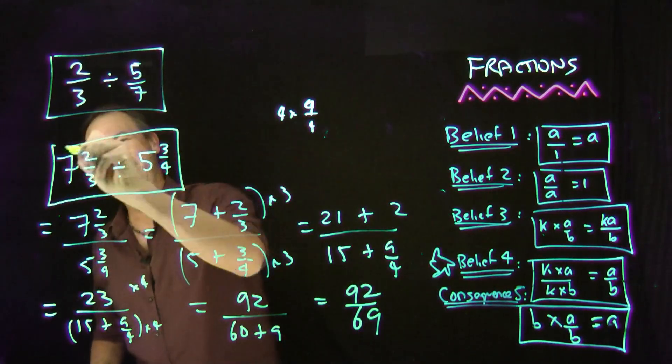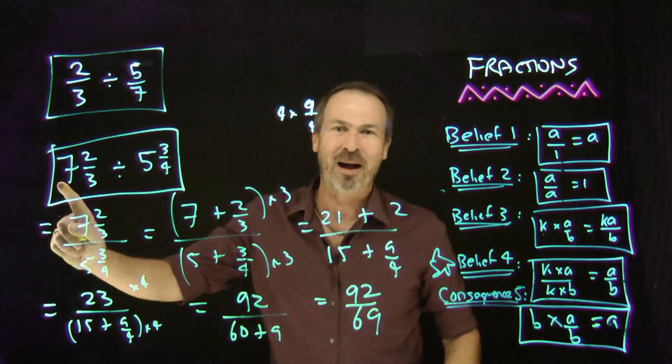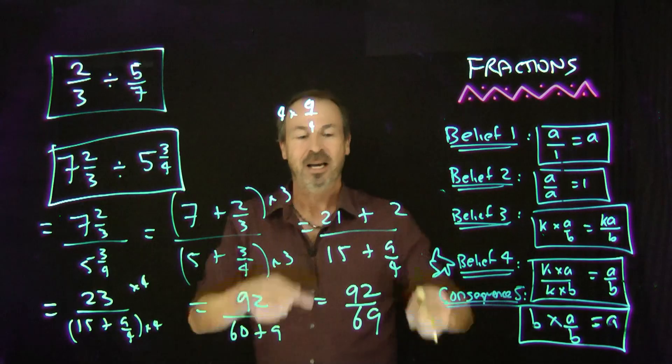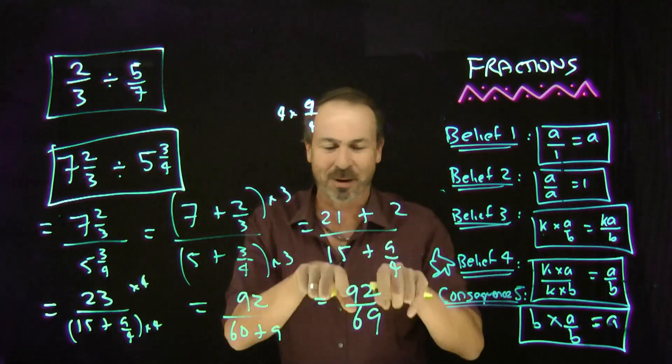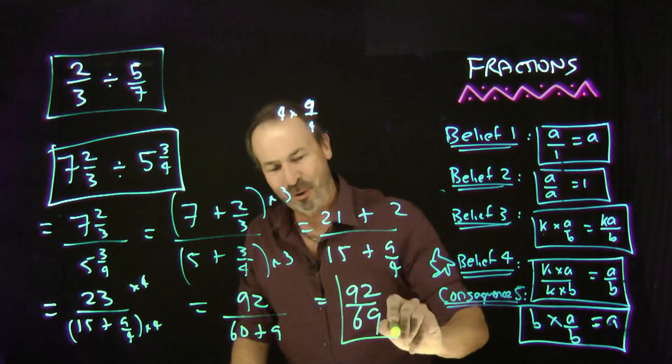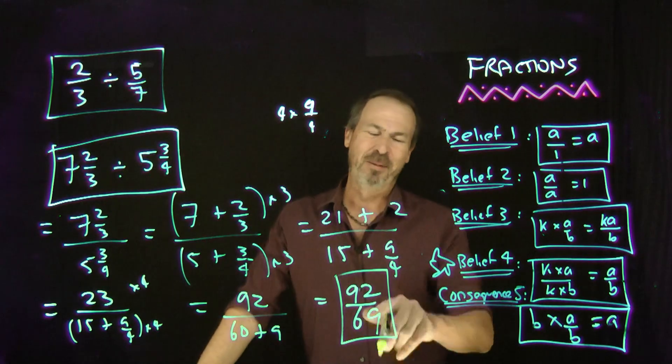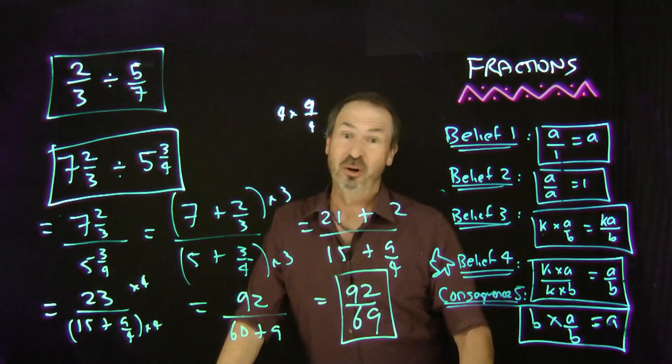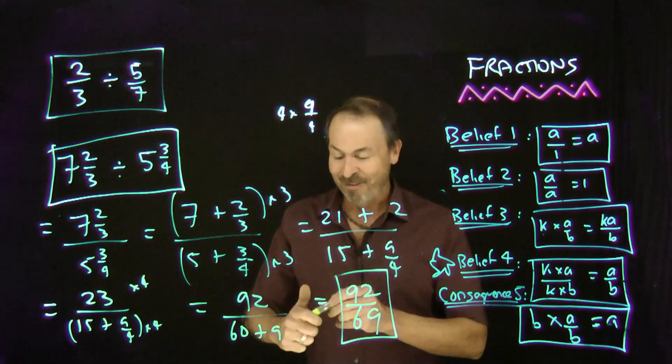So, sharing 7 and 2 thirds pies equally amongst 5 and 3 quarters students is apparently equivalent to just sharing 92 pies equally amongst 69 students. Beautiful, beautiful, beautiful. I have a little bit more of a feel for that than I do for that. Still, it's pretty nasty, but now at least it looks simpler and friendlier. Great.